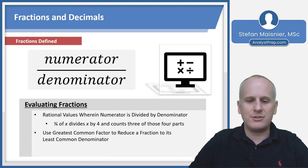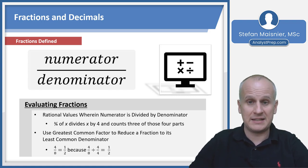Your greatest common factor is used to reduce a fraction to its least common denominator. For instance, four eighths can be written as one half because four eighths divided by four over four, which is one, equals one half. We have proven that four eighths is equal to one half.